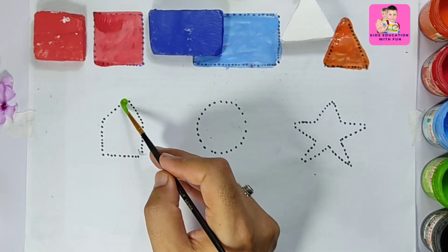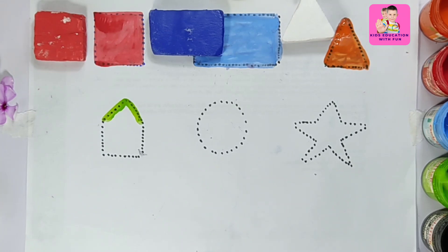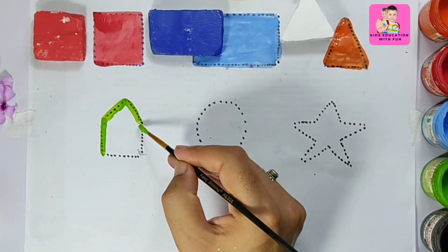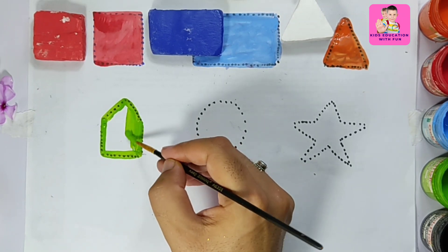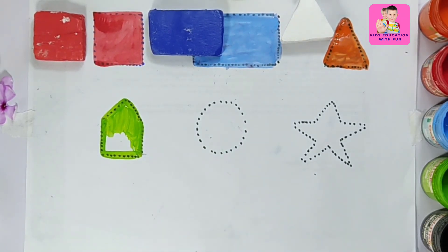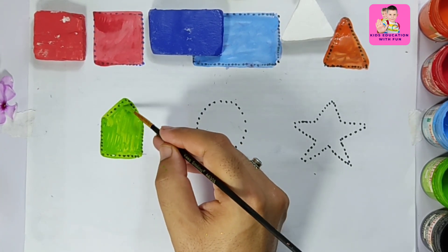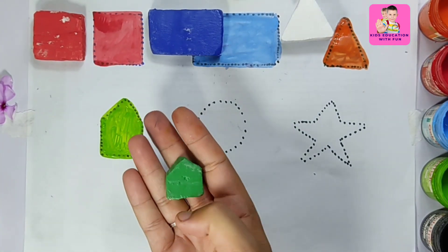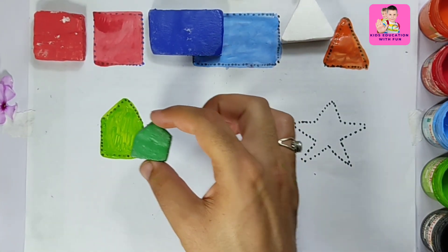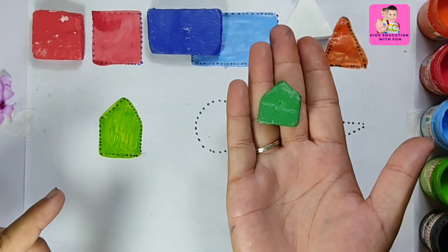This is a triangle, and that one is a pentagon with five corners. Wow, what a beautiful pentagon! Such a teeny tiny cute pentagon.